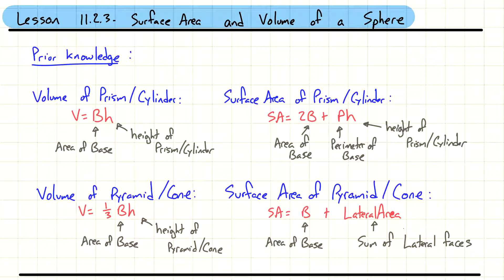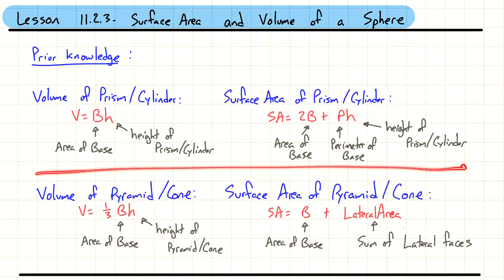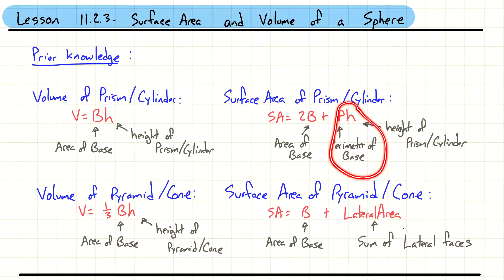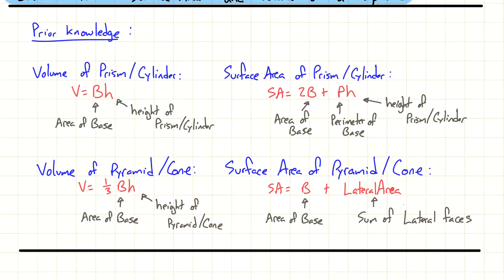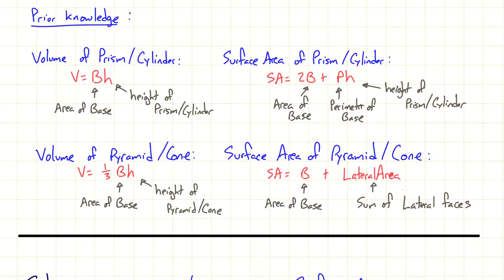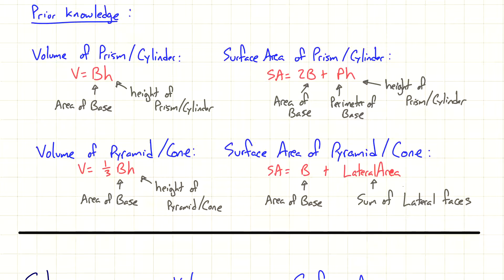Formulas for pyramid and cone were the same as each other but different from prism and cylinder — mainly the one-third in front of the base area for volume, and for surface area there is only one base instead of two. We're still looking for lateral area, which for prisms and cylinders was perimeter times height, but is a more general description here — adding up all the faces. That's a reminder worth having memorized or copied down for homework or tests.